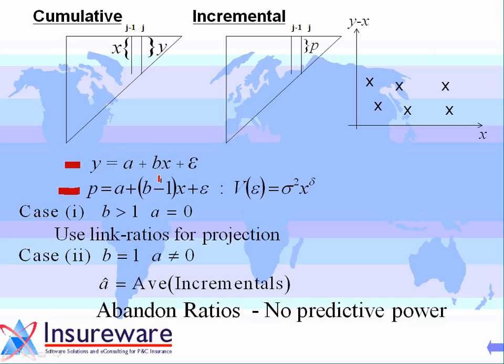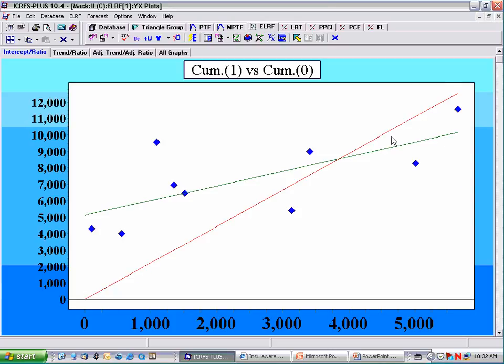What if b minus one is zero? That means when you graph the incrementals against the previous column of cumulatives, the slope of the line is zero — meaning these incrementals are not correlated to this set of cumulatives, so ratios don't have any predictive power. The ratio equals one in the presence of an intercept. We're saying that if you include an intercept, the slope of this line might be one. Don't tell your friends you've got a ratio of one if in fact you include an intercept that is required by the data.